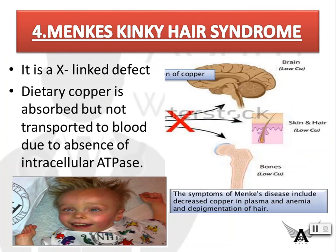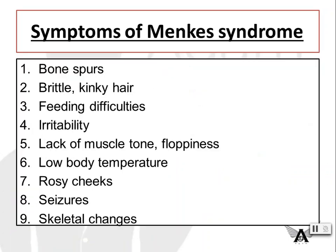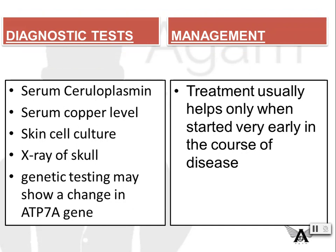Menkes kinky hair syndrome is an X-linked defect which affects only males. Dietary copper is absorbed but not transported to the blood due to absence of intracellular ATPase. Symptoms include bone spurs, brittle or kinky hair, feeding difficulties, irritability, lack of muscle tone or floppiness, low body temperature, rosy cheeks, seizures, and skeletal changes. Diagnostic tests include measuring serum ceruloplasmin, serum copper levels, skin cell culture, X-ray of skull, and genetic testing which may show a change in the ATP7A gene. Treatment usually helps only when started early in the course of the disease.